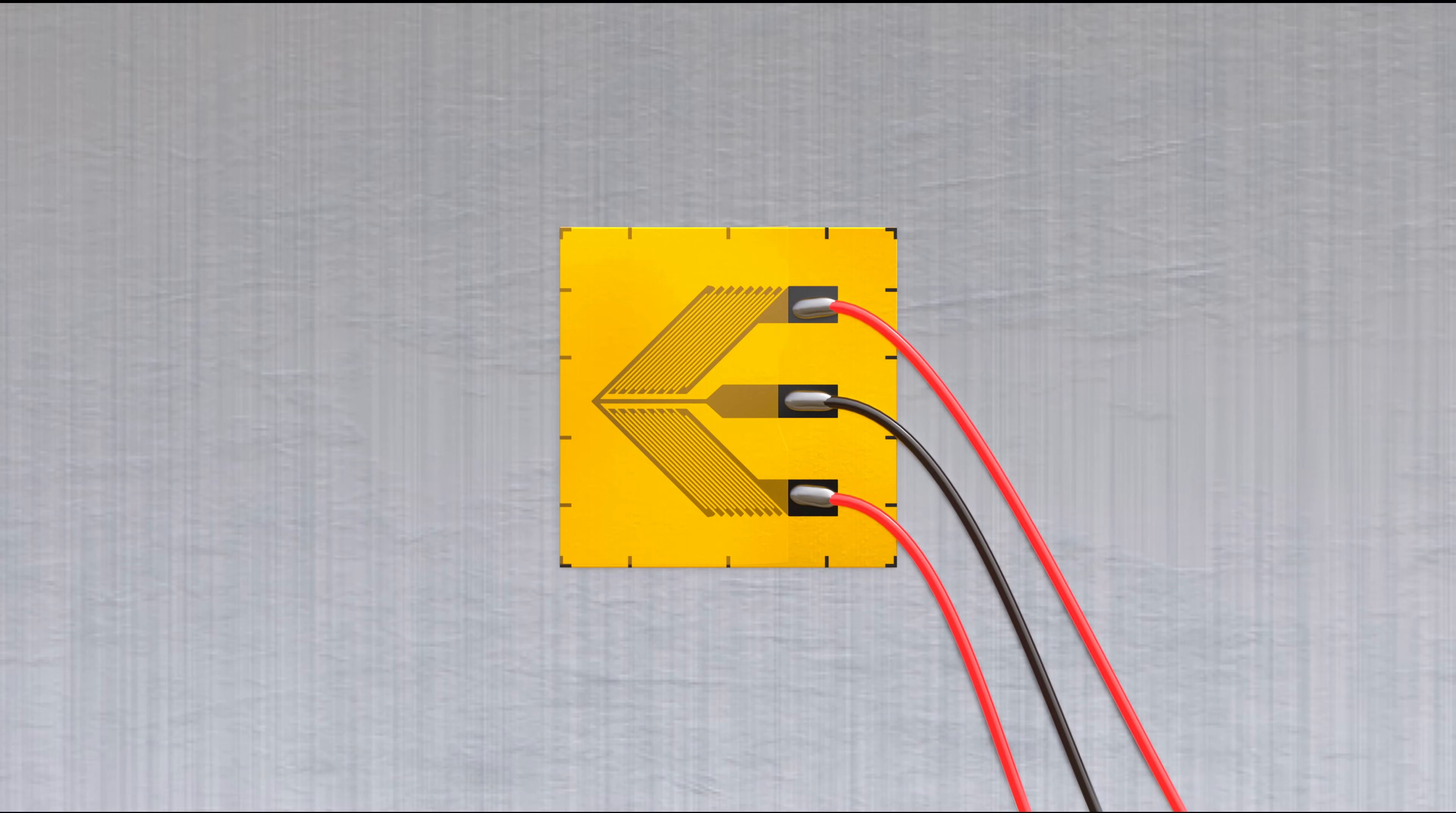If two strain gauges are separated by a 90 degree angle, the shear strain along the axis running between them is equal to the difference in the normal strains measured by the two gauges. Rosettes like this one are often used to measure the shear strain on rotating shafts, from which the torque acting on the shaft can be determined.